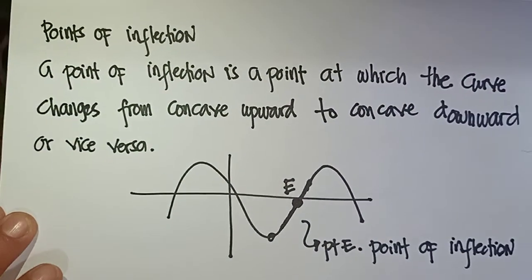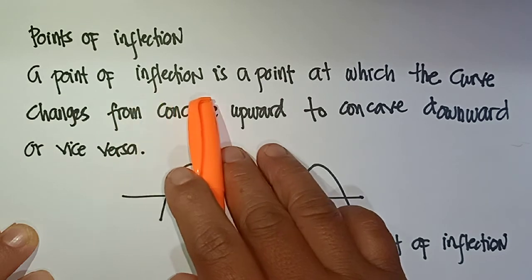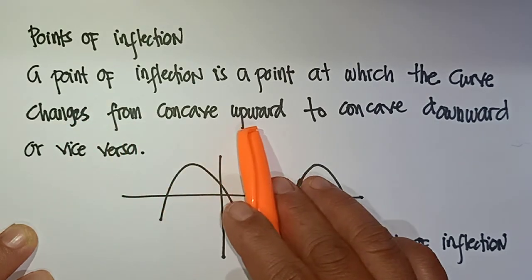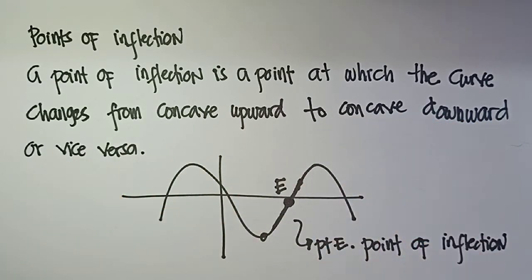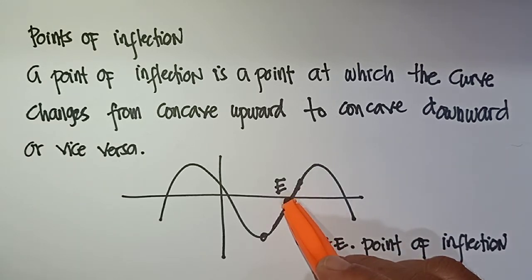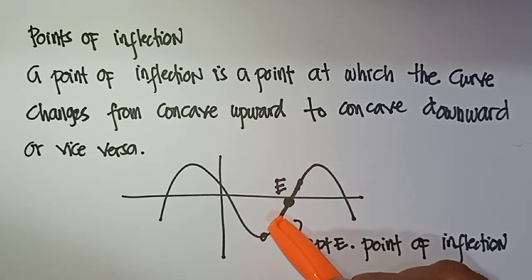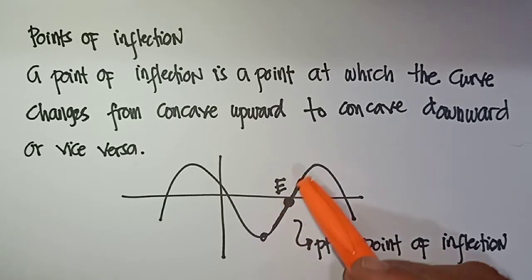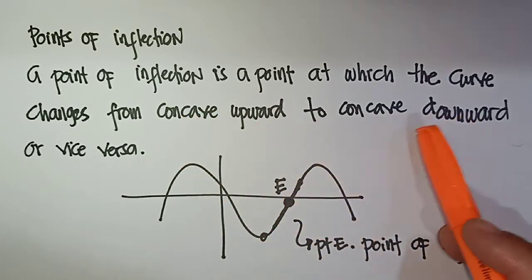There is what we call a point of inflection. A point of inflection is a point at which the curve changes from concave upward to concave downward, or vice versa. At point E, this is the point of inflection because the curve changes from concave upward to concave downward.